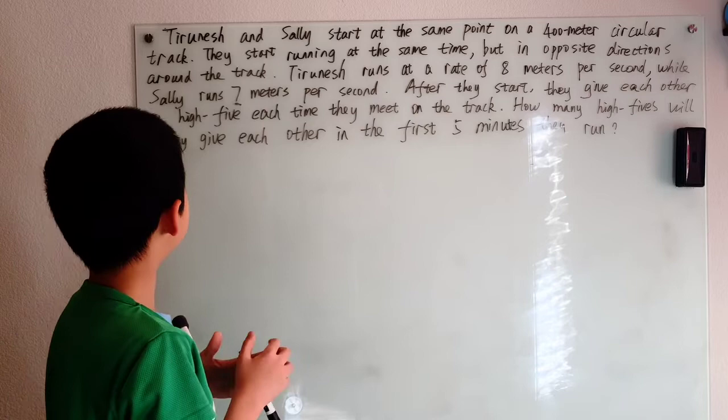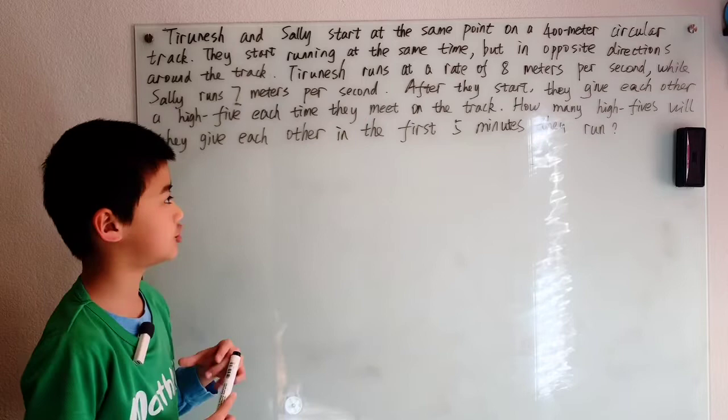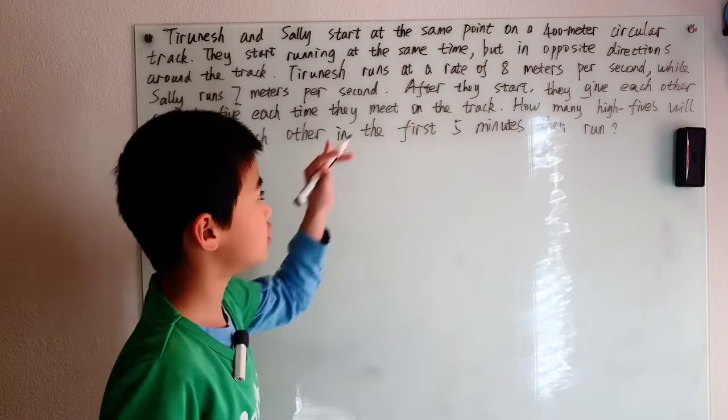Tranish runs at a rate of 8 meters per second while Sally runs 7 meters per second. After they start, they give each other a high five each time they meet on the track. How many high fives will they give each other in the first 5 minutes they run?